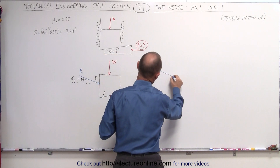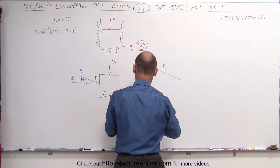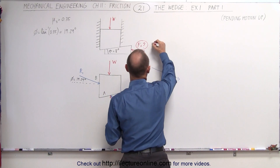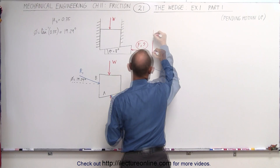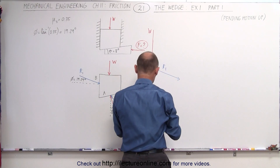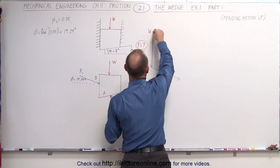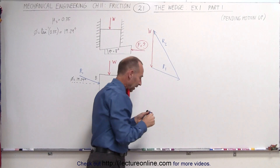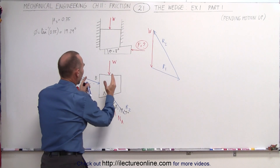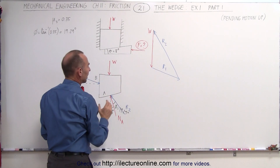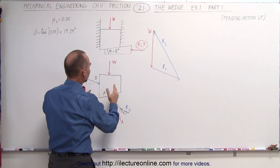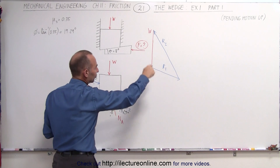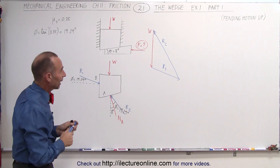Let's draw the force triangle. This is reaction force R1, here is the weight force W, and then we have reaction force R2. This shows the sum of the forces acting on the object at the pending motion situation — just enough force so the block is ready to start moving up. The sum of all forces equals zero.